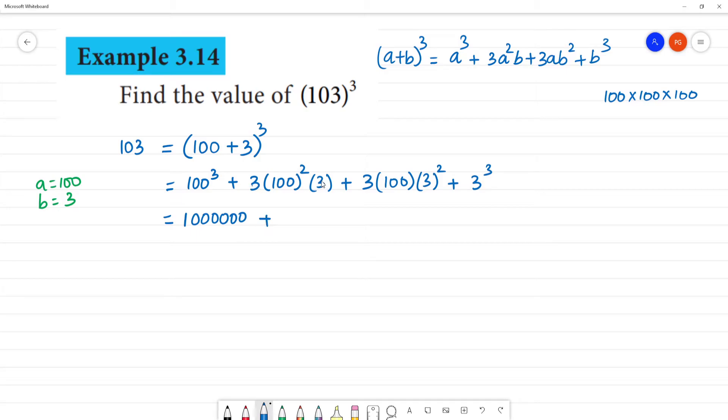Plus 3×3 is 9, multiplied by 100². 100×100 is 10,000 with 4 zeros, so 9×10,000 equals 90,000.